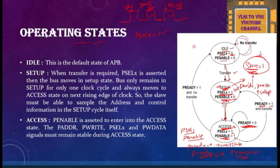When P_READY equals 1 and the transfer is complete, if there is another transfer waiting in line, the bus goes back to the setup phase again — P_SELECT becomes 1 again and the process continues. For example, if you are sending two packets of data from master to slave, after the first transfer completes, if there is a next transfer waiting, the bus returns to the setup state to handle it.